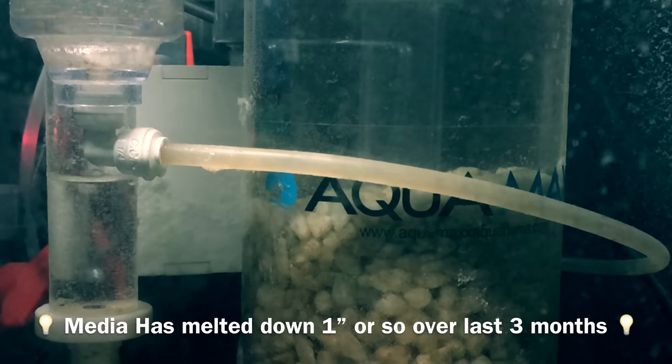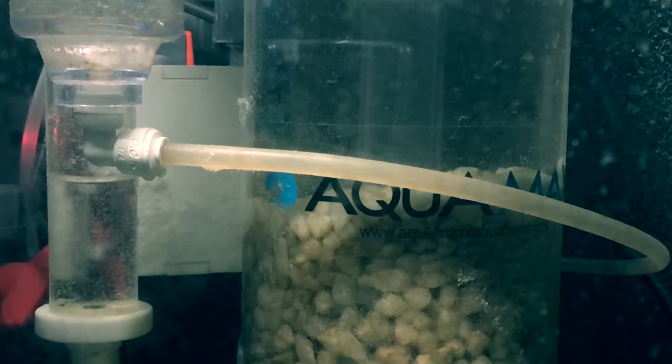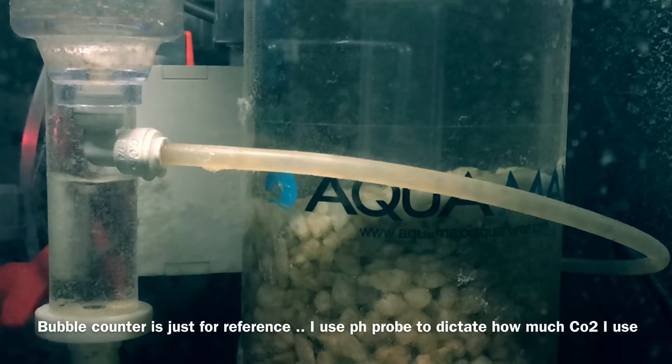At this point, the calcium reactor is fully connected. We got media, we have water, and now we have CO2 running into it. Now the fun part begins and the biggest question is: how much CO2 do you use? How do you know how much you're using? For anyone that's new, take a look on the left. You'll see that little tube chamber with the bubbles going up inside of it. That's referred to as the bubble counter.